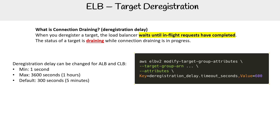You can modify the deregistration delay for ALB and CLB. It can be anywhere from one second up to one hour, but the default is five minutes. NLB does not have a configurable deregistration delay — you get what you get.